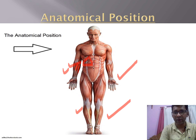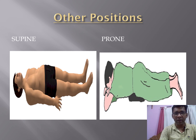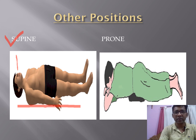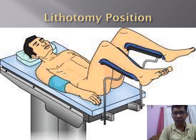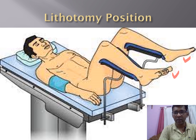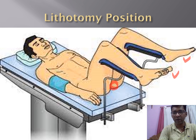The supine position is when a person is lying on their back looking towards the ceiling. The prone position is when a person is lying on their abdomen with their back facing the ceiling. Another position is the lithotomy position, where both legs remain in a specific raised position. Many operations occur in this position, such as surgeries involving the perineum, fissure, piles, hemorrhoidectomy, and normal delivery.